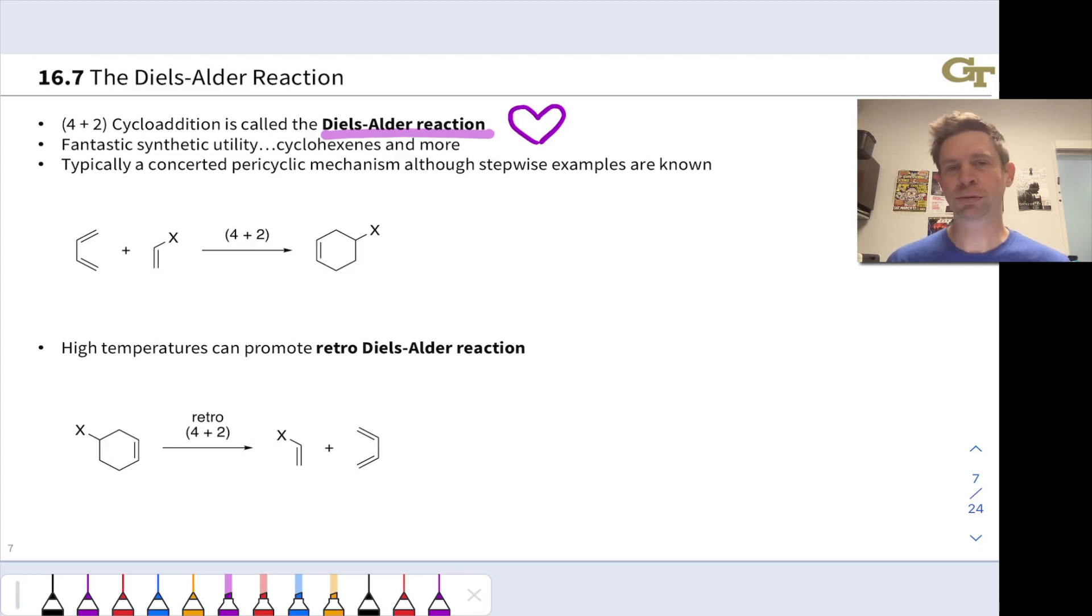The Diels-Alder reaction, or 4 plus 2 cycloaddition, is one of the most beloved and important reactions in all of organic chemistry. It's so important because it is so useful synthetically. It builds up a lot of molecular complexity in a single reaction flask, in a single reaction step.